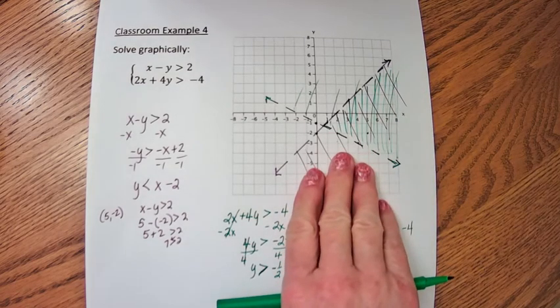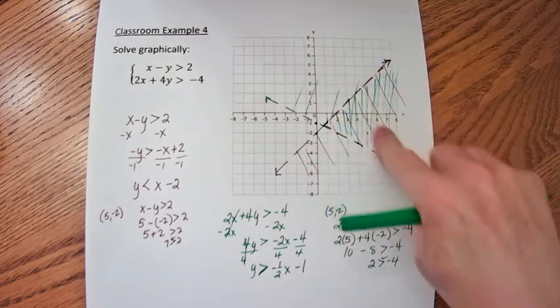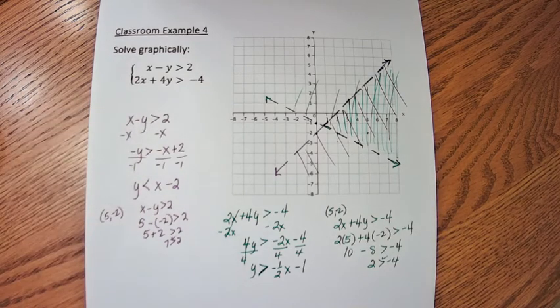These would just make the purple line true, or inequality true. These would make just the green inequality true. But this is the solution region for this system.